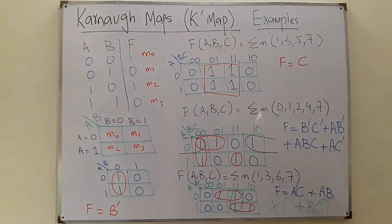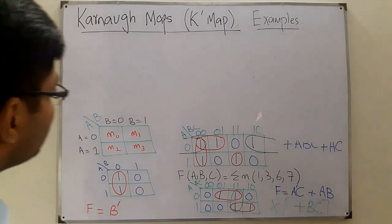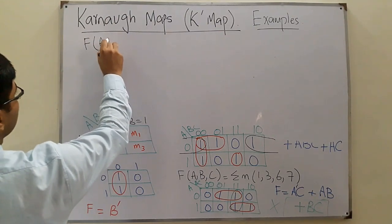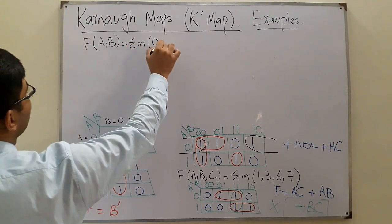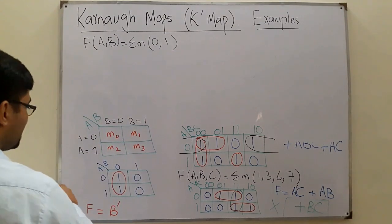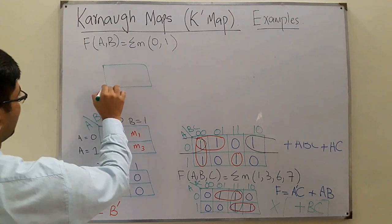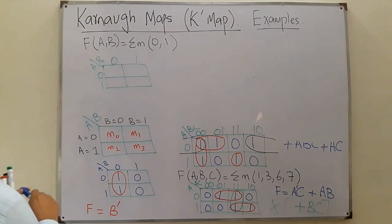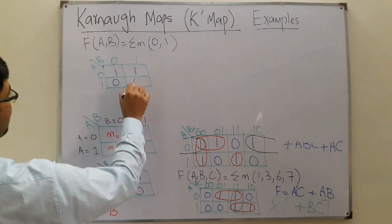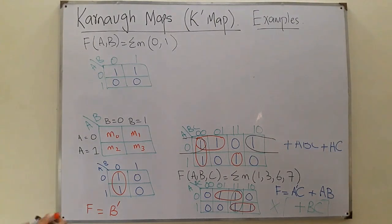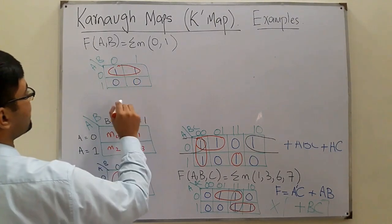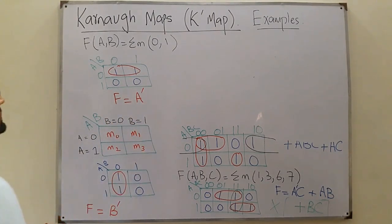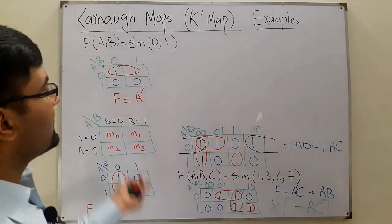Let's do a two-variable example: summation of min terms 0 and 1. You draw the K-map. A is on one side, B on the other. m0 and m1 are high, the rest are zero. Grouping them: A is not changing and is in its low state, so A complement; B is changing so it drops. Therefore F equals A complement. Two-variable K-maps are simple.